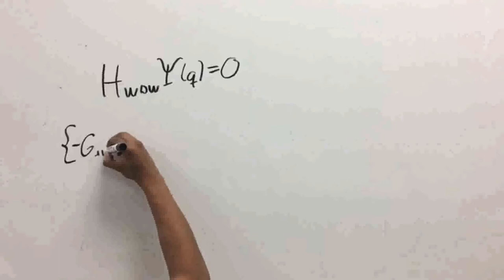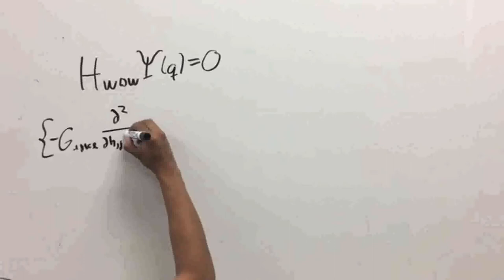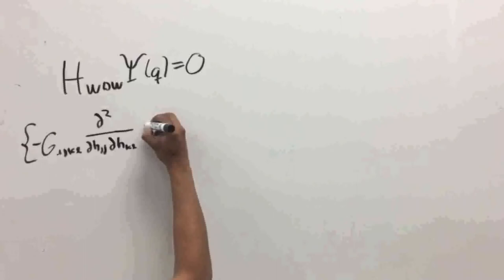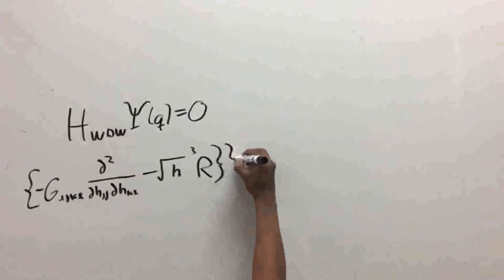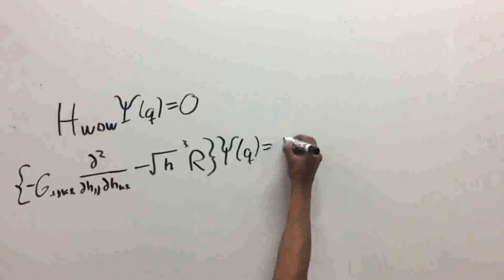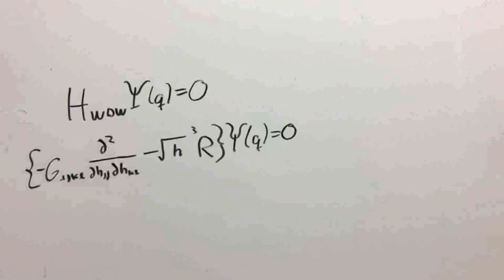H-WDW multiplied by the wave function of q equals 0, where the Hamiltonian operator is equal to minus the tensor g with indices i, j, k, and l multiplied by a double partial derivative with respect to h with indices k and l and then with respect to h with indices i and j minus the square root of h to the third power multiplied by R, all of this multiplied by phi of h with indices i, j equals 0,